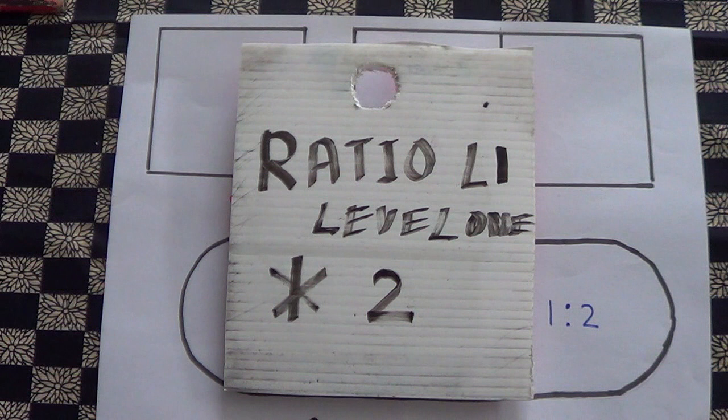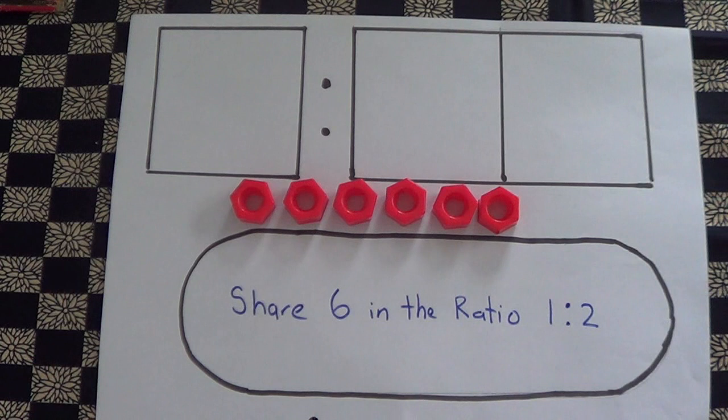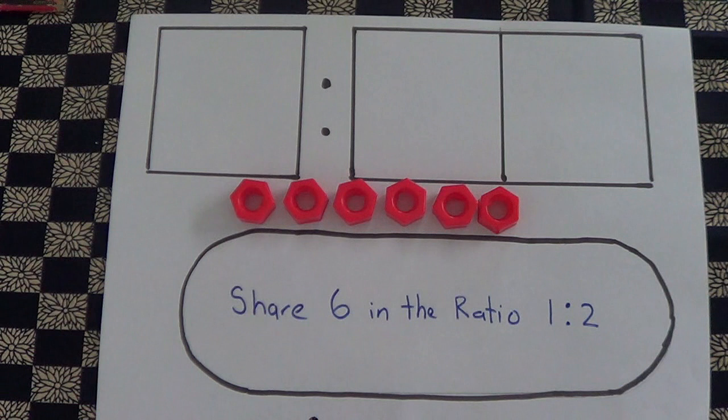This is ratio level one, take two. Let's begin. We're going to share six objects in the ratio 1:2, and what we have here...